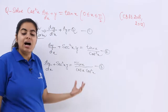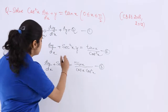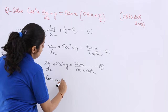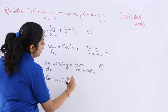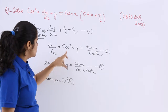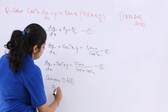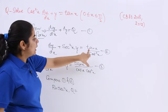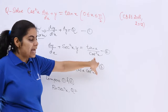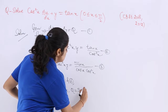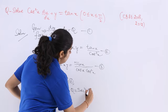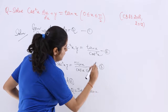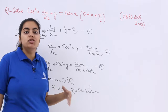Now it is very clear that I can find P and Q. Comparing equations 1 and 2, P is sec²x and Q is tan x / cos²x, which is the same as sec²x · tan x.